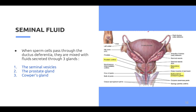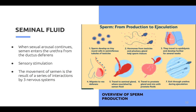Seminal fluid, also called semen, is produced from the male reproductive tract and contains sperm cells capable of fertilizing the female eggs. When sperm cells pass through the ductus deferentia, they are mixed with fluids created by three glands: the seminal vesicles, the prostate gland, and Cowper's gland. When sexual arousal continues, semen enters the urethra from the ductus deferens, driven by a series of interactions involving three nervous systems.